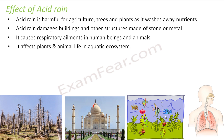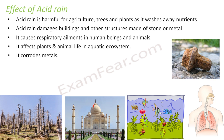Acid rain will cause respiratory ailments in human beings and also in animals. It will impact the life of animals and plants in the aquatic ecosystem — since the water becomes acidic, it will kill aquatic plants and aquatic animals. It will also corrode metals.